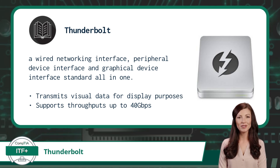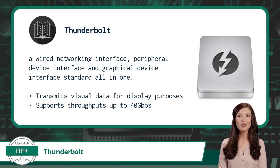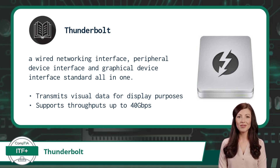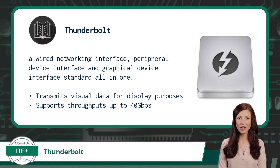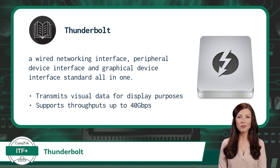Thunderbolt adds to many of the great features already offered by USB. First and foremost, Thunderbolt added the ability to transmit visual data for display purposes, thus making it a graphical device interface. It also offers throughputs up to 40 gigabits per second — that is fast.